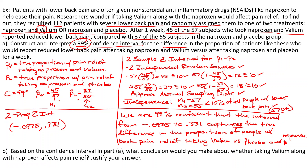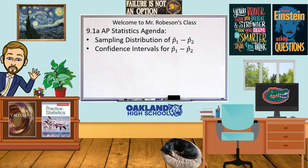Based on the confidence interval, sadly zero is in the interval, which means the probability of pain relief with Valium could equal the probability with the placebo — there could be no difference. That is a plausible value. If we switched to a 95% interval it would be smaller and might not include zero. But we went with 99%, so we stick with those consequences. That's how we deal with sampling distributions and confidence intervals for the difference of proportions. Next, we'll look at the hypothesis test.